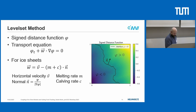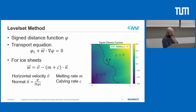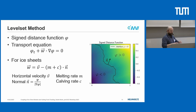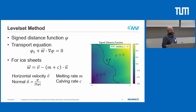For tracking the front, we are using what's called the level set method. In this method, you don't have an explicit representation of the front like a spline. Instead, you represent it implicitly using a signed distance function. As you can see in the image, it has a value that increases with the distance from the front — negative where there is ice, positive where there is no ice. Where the value of the signed distance function is zero is the front. The movement of the front is then a simple transport equation.